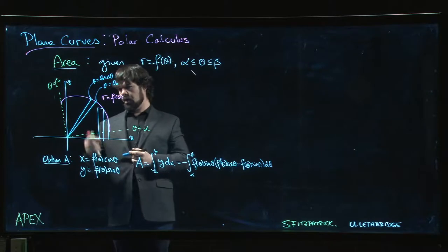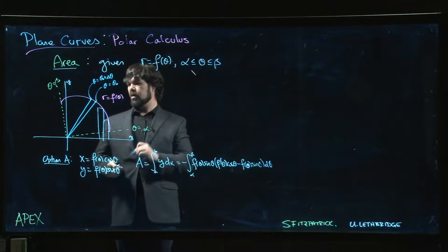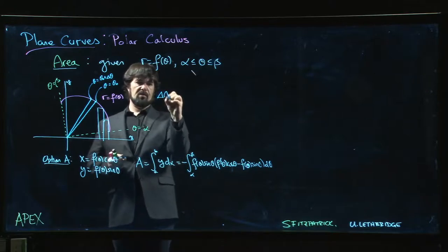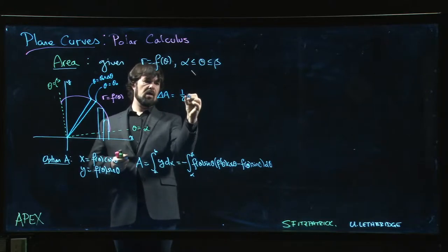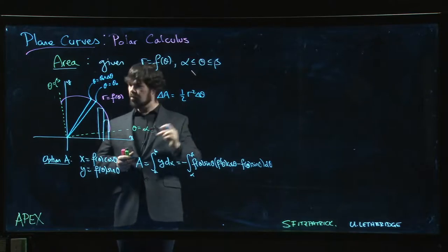And so you can play around with that and you can say, well look, I know what the area for a wedge of a circle is. The area for the wedge of a circle is one-half r squared delta theta.